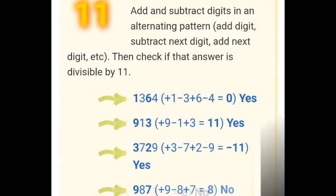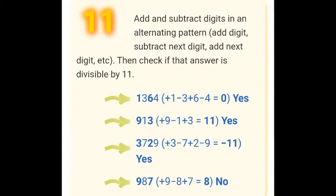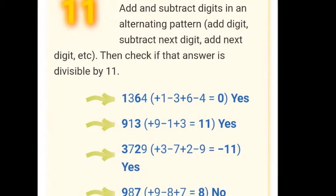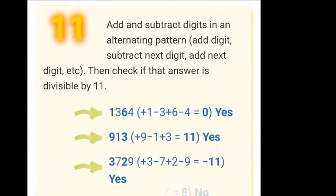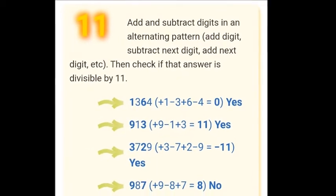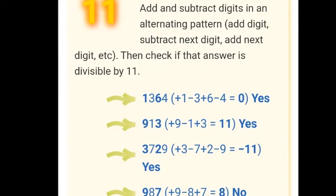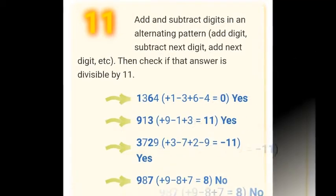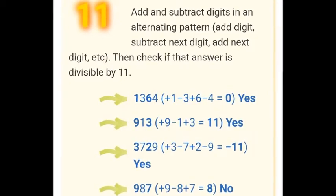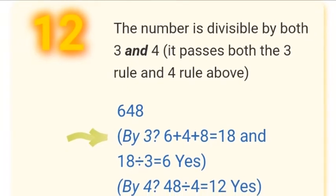Another example is 3729: +3 − 7 + 2 − 9 = −11. Since −11 is divisible by 11, 3729 is divisible by 11. Another example is 987: +9 − 8 + 7 = 8. Since 8 is not divisible by 11, 987 is not divisible by 11.